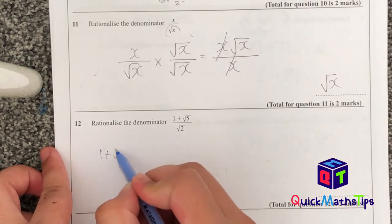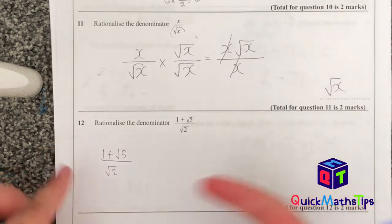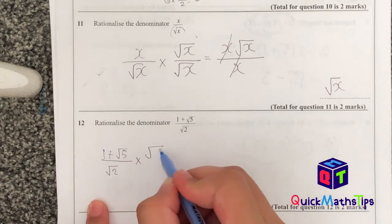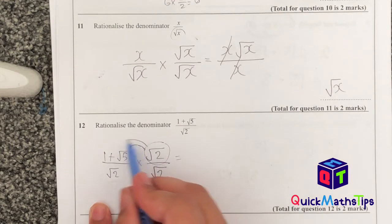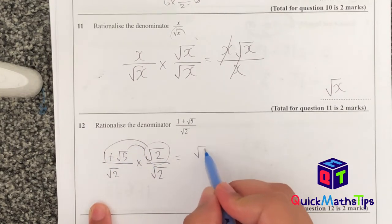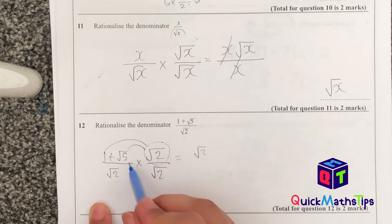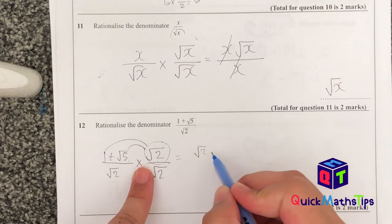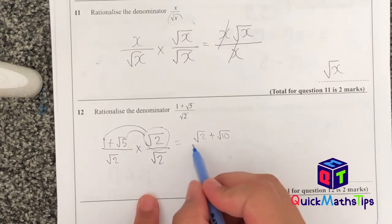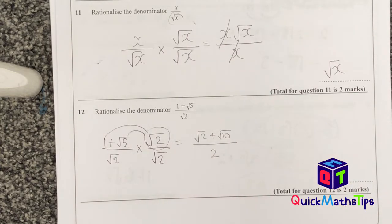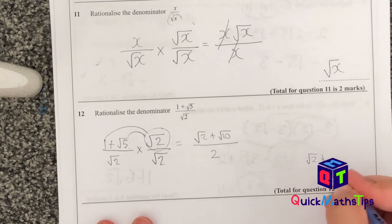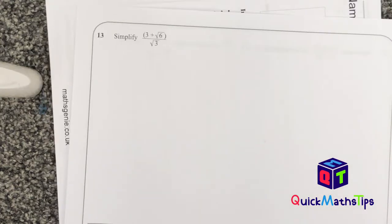To rationalise (1 + root 5) over root 2, multiply by root 2 over root 2. Expanding the numerator: 1 times root 2 = root 2; root 5 times root 2 — since they're both under roots, multiply 5 times 2 = 10, giving plus root 10. The denominator: root 2 times root 2 = 2. So the answer is (root 2 + root 10) over 2.